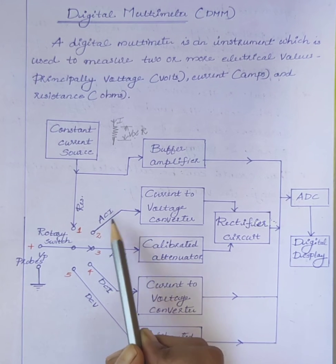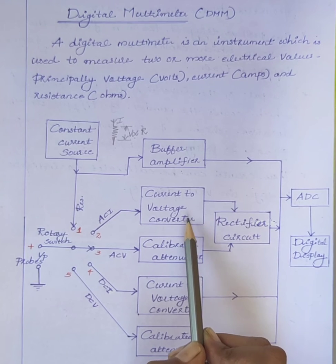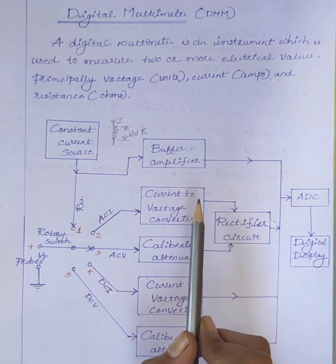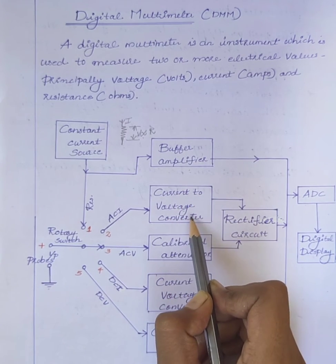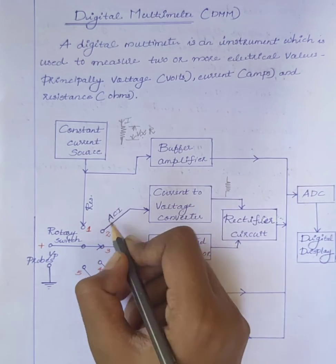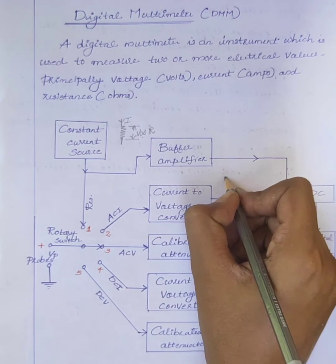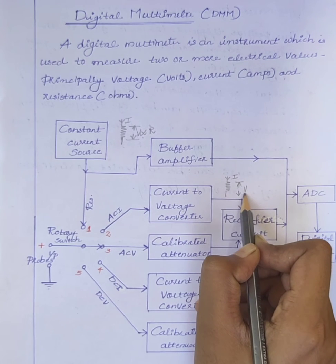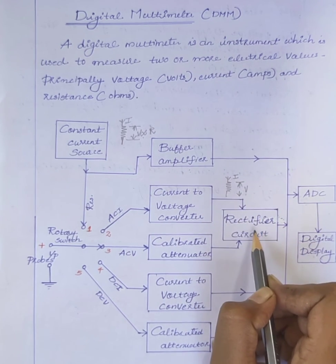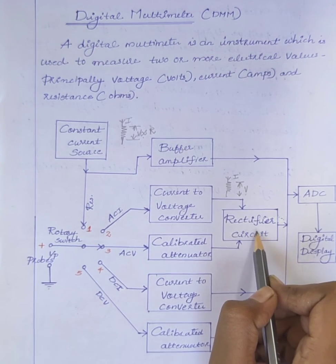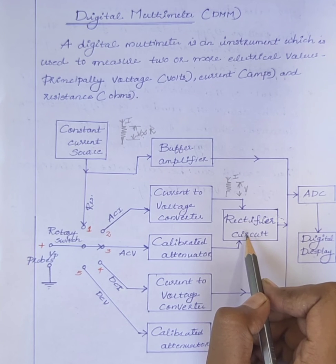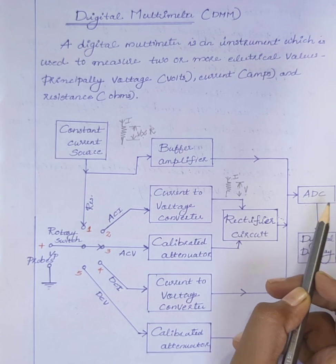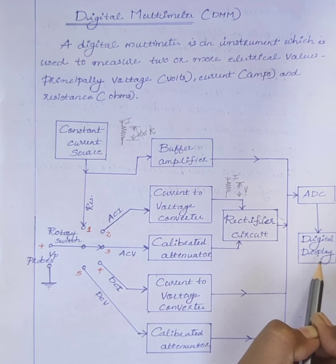Initially, the AC current is given to a current to voltage converter. A current to voltage converter consists of a resistor. The unknown AC current is passed through the resistor, and a voltage which is proportional to this current is obtained. This AC voltage is given to the rectifier circuit. The rectifier circuit converts AC quantities into DC and gives them to the analog to digital converter, and the value is displayed on the digital display.